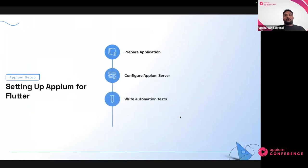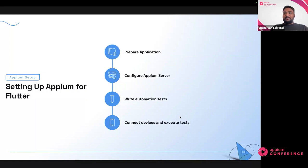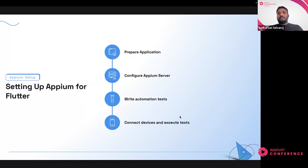If someone wants to use the Flutter Integration Driver for automation, it's very simple. You follow similar steps to automating any other typical mobile application with UI Automator 2 or XCUITest. There is one additional thing: this particular driver needs your application to be built in a certain way, which is documented in the repository and anyone could easily follow it. Once that's done, rest remains the same — install the Appium server, install the driver, create automation tests, connect your device and run it. You can easily plug it into any CI/CD pipelines.